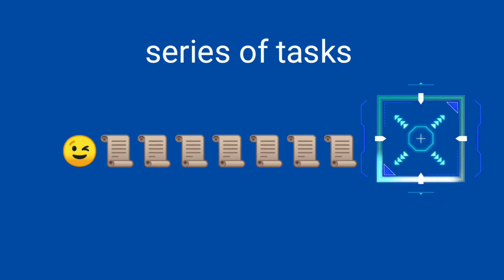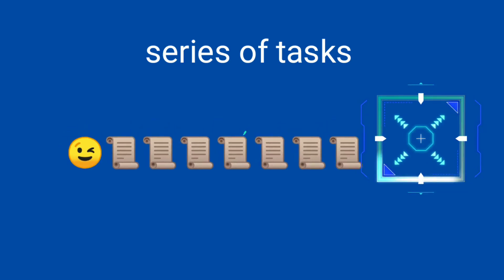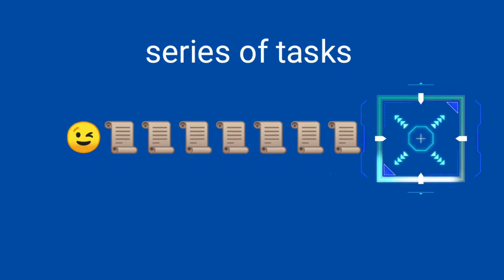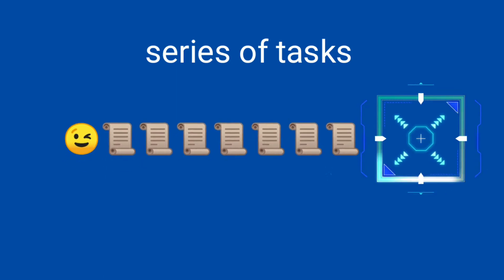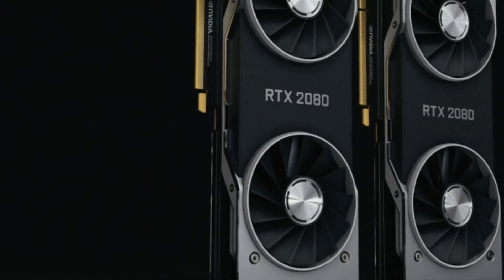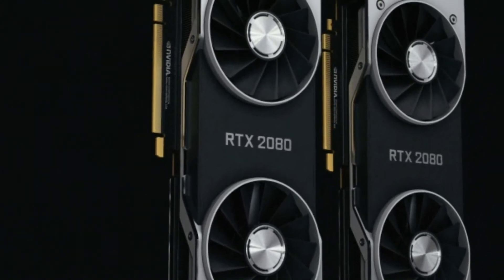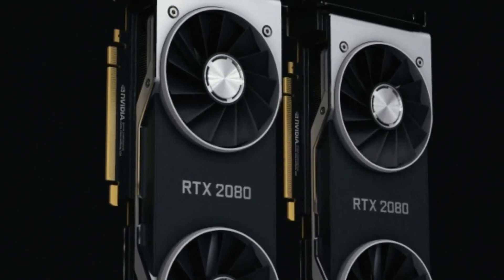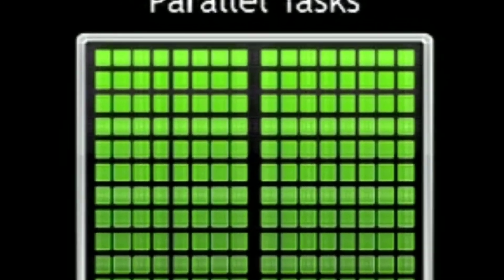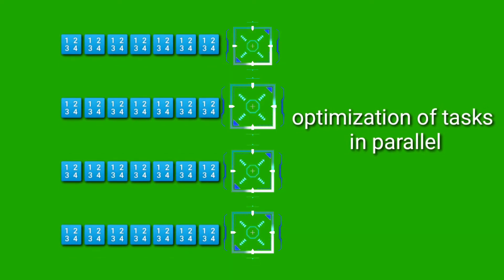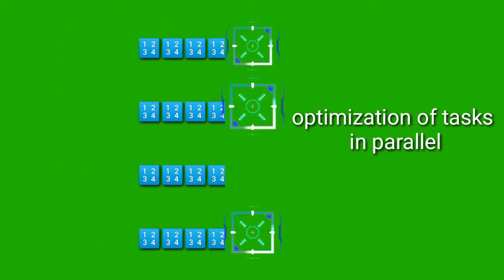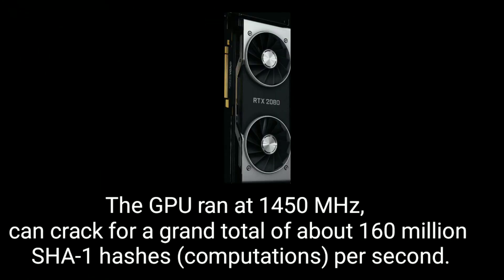I made this little animation to show you guys how the CPU works — it actually takes tasks in a serial way and executes them serially. On the other hand, the GPU is optimized for many parallel tasks, and as you can see in the GPU animation, it executes tasks in a parallel way.